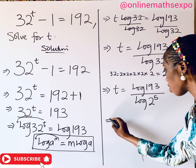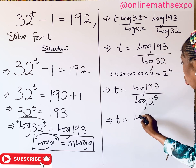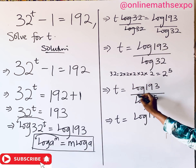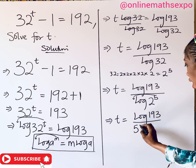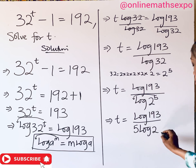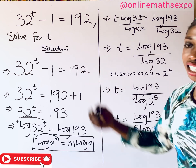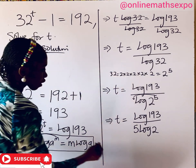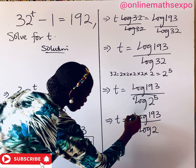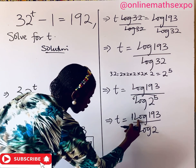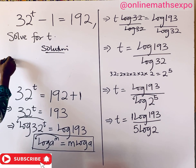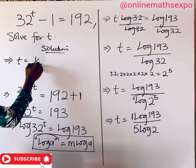Applying the logarithm power rule to the denominator, the 5 comes out to multiply, giving us log 193 all over 5 log 2. Note importantly that there is a coefficient of 1 in front of log 193 in the numerator, which is very important for the next step.